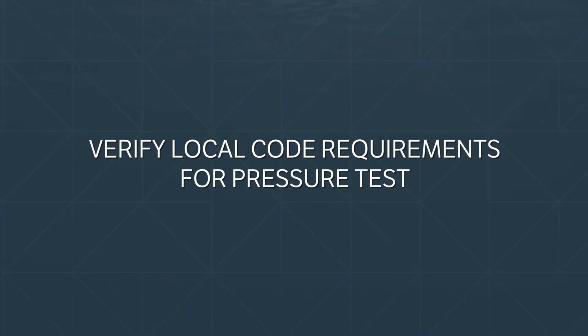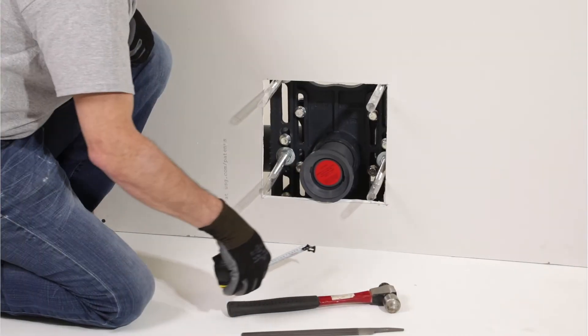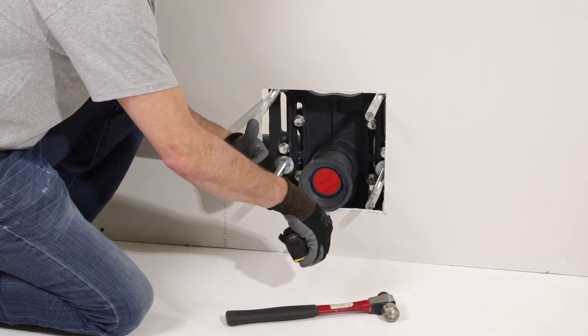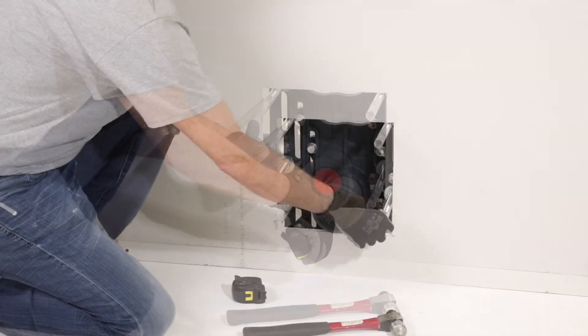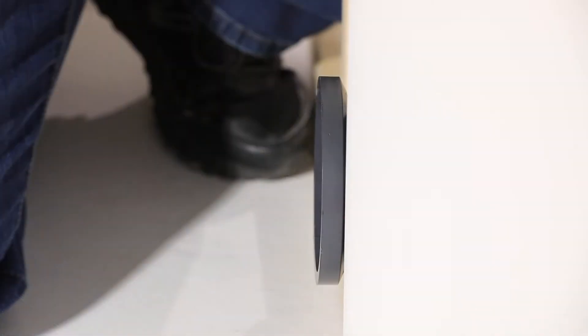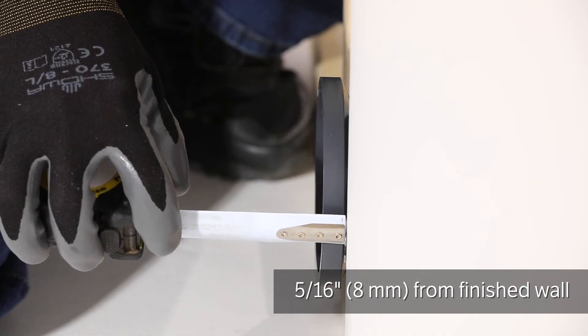Test the pressure based on your local code requirements. Now construct the finished wall and make the coupling opening in the wall to the appropriate size. Remove any protective materials from the coupling and remove the threaded rod protectors. Ensure the coupling extends five-sixteenths of an inch from the finished wall.